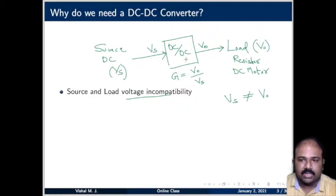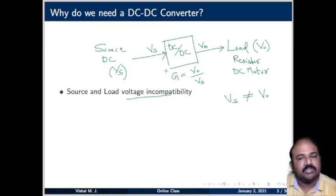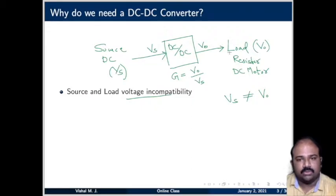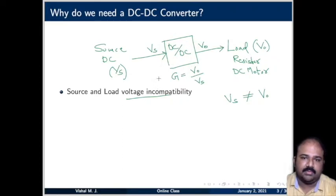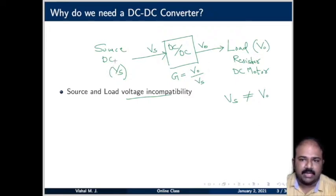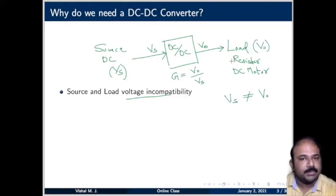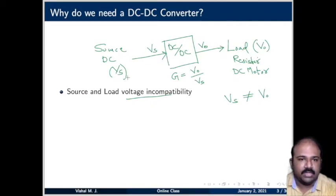The purpose of a DC-DC converter is to make two voltages which are otherwise different compatible with each other. In addition, modern DC-DC converters can bring in several other power quality improvements. Most probably the source would be a fixed source — like a diode rectifier or a battery — where the voltage is fixed, and the load might need variable voltage, as in the case of a DC motor for speed control. DC-DC converters can generate variable output from a fixed input DC supply.